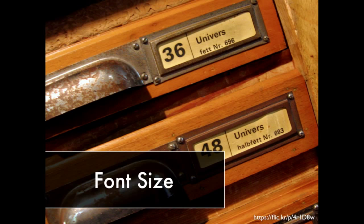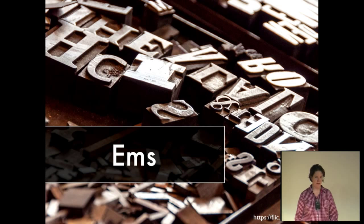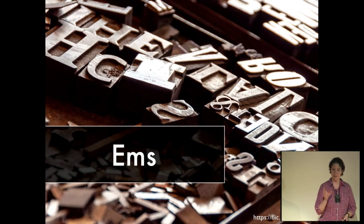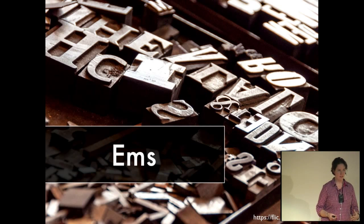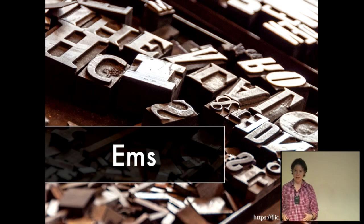The first thing we need to talk about is font size. When you're doing responsive websites, you might be used to doing your font size in pixels, but we're going to use relative units like ems or rems so your text can be responsive to the size of the screen. Ems — if you've ever done anything with typography, this is the typography term. It originally came from when they did metal typesetting. They determined the size of the font by how wide the letter M was on the block, because that was the widest letter of the alphabet. That's where ems came from.